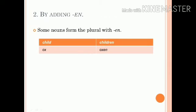The second way of forming irregular plurals is by adding EN. Only two words exist in modern English: child → children, ox → oxen.